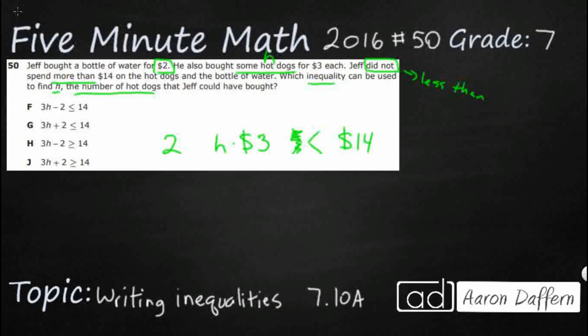He did not, but it doesn't say that he couldn't spend $14 and take a look at all my answers. They've all got that greater than or equal to. So I'm going to go ahead and put that greater than or equal to, because it says he did not spend more than 14, but it doesn't say he spent less than 14.